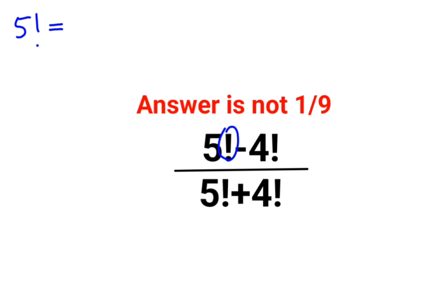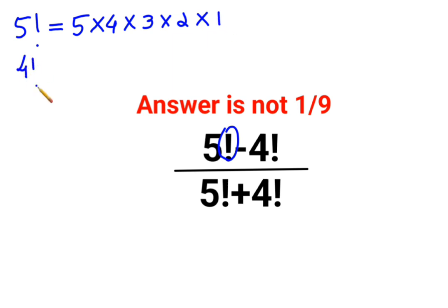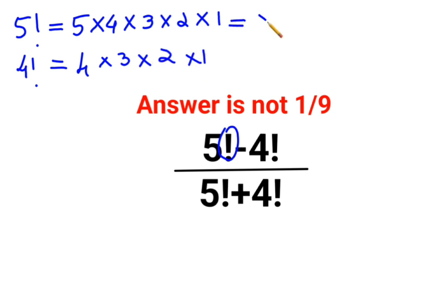How do I find the factorial of 5? That is nothing but the product of the next consecutive numbers in decreasing order till you reach the value of 1. Similarly, 4 factorial can be written as 4 multiplied by 3 multiplied by 2 multiplied by 1. So 5 factorial can be written the same way — 5 multiplied by 4 factorial can be written as 5 factorial.